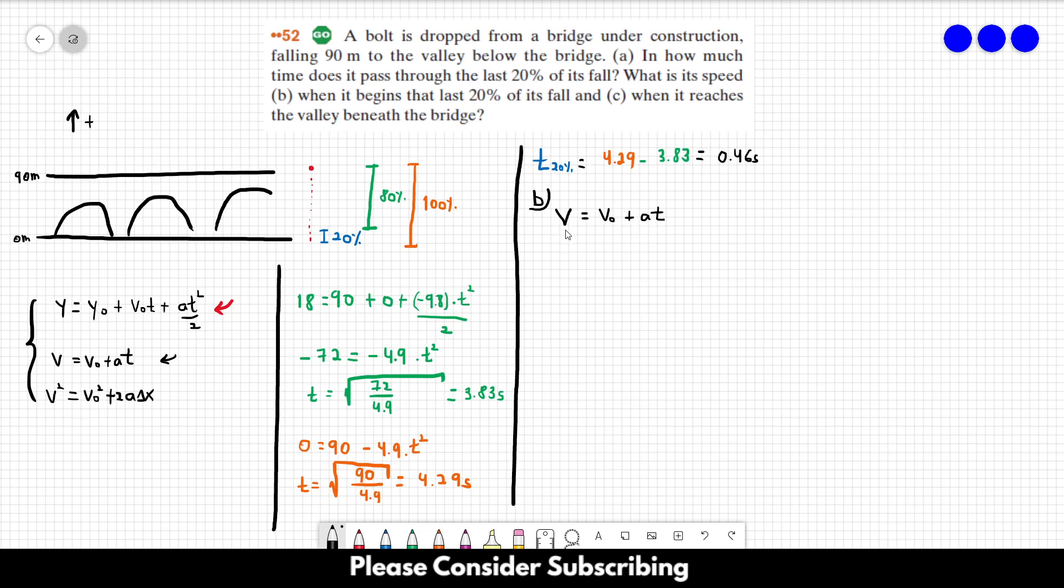So the final velocity is equal to the initial velocity, which is 0, minus 9.8 times the time it took to reach the position, that is 3.83. And then we find that it is about 38 meters per second. Minus 38 meters per second. This is the velocity.